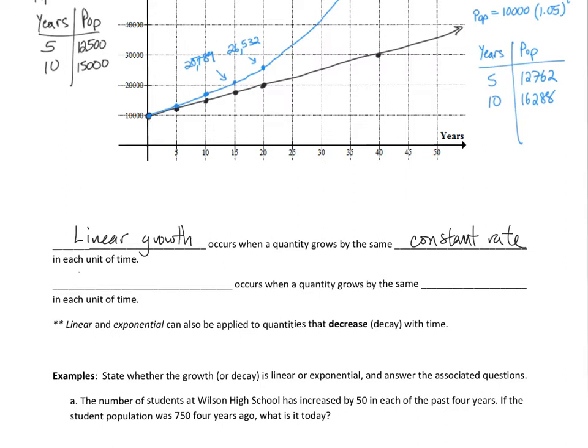So let's take a look then at a little bit of this information in words. We have linear growth occurs when a quantity grows by the same constant rate, whereas exponential growth occurs when a quantity grows by the same percentage. So linear and exponential can also be applied to quantities that decrease with time, or we would use the word decay. But the main takeaway here is that linear growth occurs when a quantity grows by the same constant rate. Exponential growth occurs when a quantity grows by the same percentage.